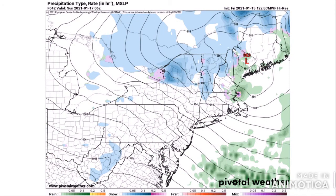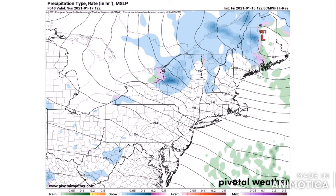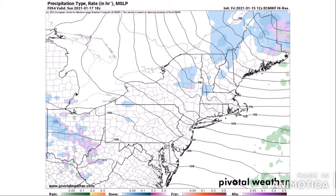By Sunday at 6Z, a 983 millibar low is visible over southern Maine. We're mainly seeing some light to moderate snow accumulations in north-central New York. By Sunday at 12Z, a 981 millibar low is over northern Maine, with the snow in north-central New York getting even heavier — this is where I think we can see the most snow. Northern Maine could see some moderate snow as well. By 18Z, precipitation will be mostly light, mainly for northern Maine.